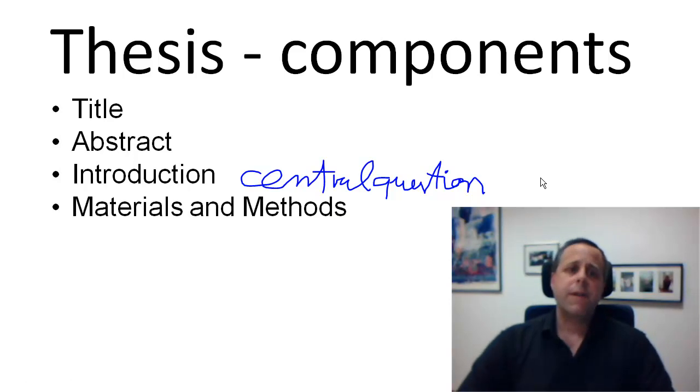Next chapter is materials and methods, usually considered quite boring by many people who are trying to write it. However, it's still important, because that's the only way how you can tell a future student in your lab or in some other lab how to repeat your experiments. Your experiments are only valid if they are reproducible. Otherwise, it's fairly useless. So that's why the materials and methods are an important section.